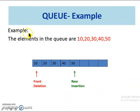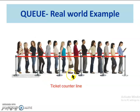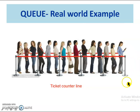Let us see an example. This is how the Queue looks like with elements 10, 20, 30, 40, and 50, with the front pointer pointing to the beginning of the queue and the rear pointer pointing to the end of the queue. The real world examples for Queue are ticket counter lines in a theater, railway station, bank, etc. In the queue, the first person entered is the first person to be served and he leaves the queue.